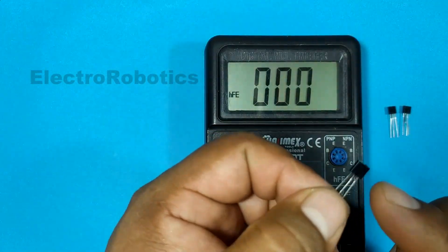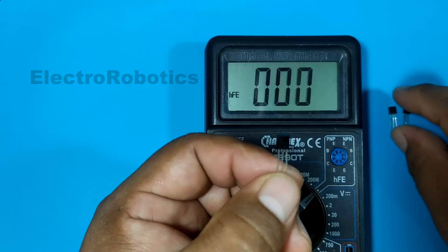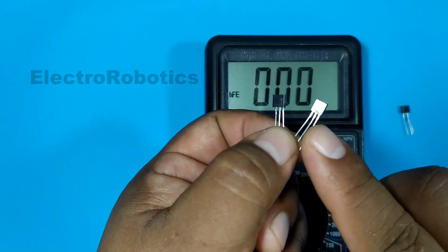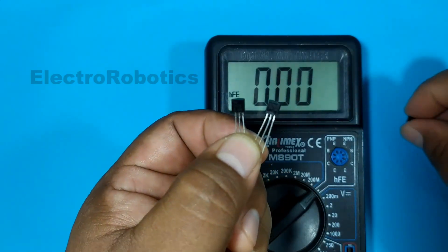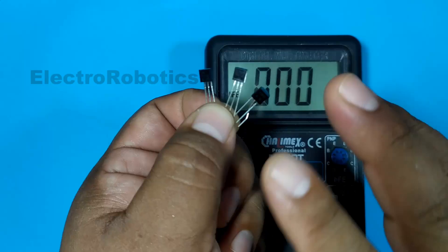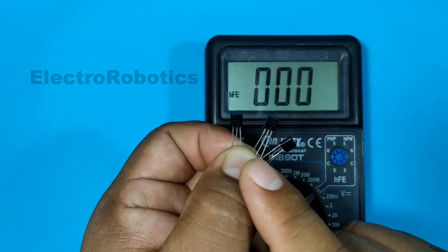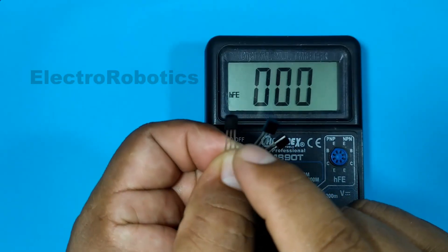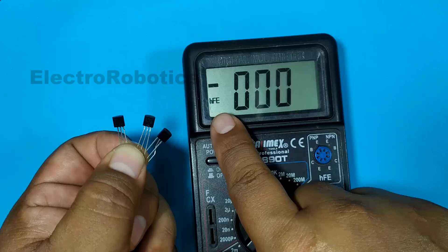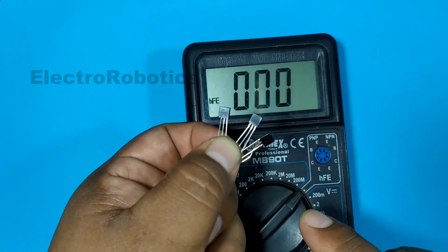We have a 2N5551 transistor that handles half an amp, a BC547 that handles only 0.1 amps, and a 2SD965 that handles 5 amps. All three are NPN type BJT transistors. Now the distribution of the pins is not the same. They are all different. So in order to test the gain on the multimeter, we have to check the distribution of the pins.